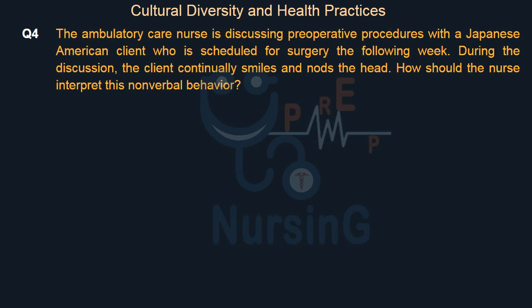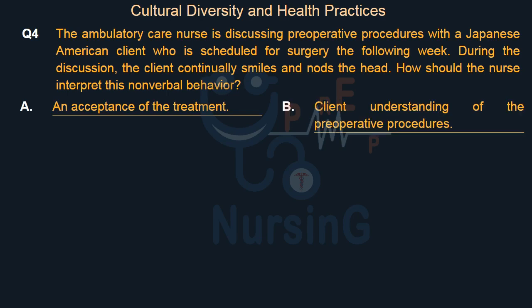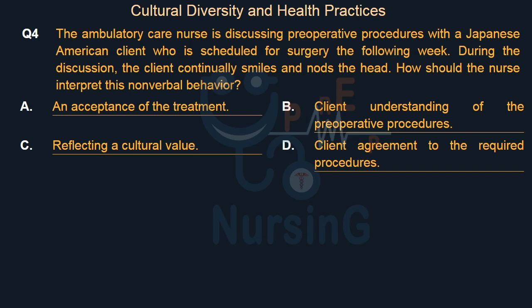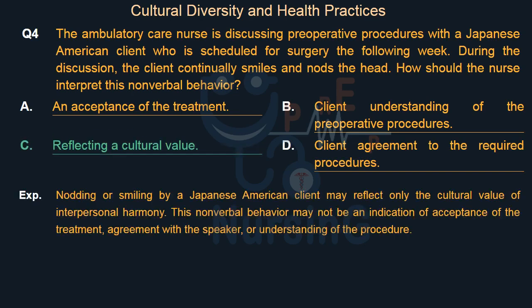The ambulatory care nurse is discussing preoperative procedures with a Japanese-American client scheduled for surgery the following week. During the discussion, the client continually smiles and nods. How should the nurse interpret this non-verbal behavior? Option A: Acceptance of the treatment. Option B: Client understanding of the preoperative procedures. Option C: Reflecting a cultural value. Option D: Client agreement to the required procedures. The right answer is Option C — Reflecting a cultural value. Nodding or smiling by a Japanese-American client may reflect only the cultural value of interpersonal harmony, and may not indicate acceptance, agreement, or understanding.